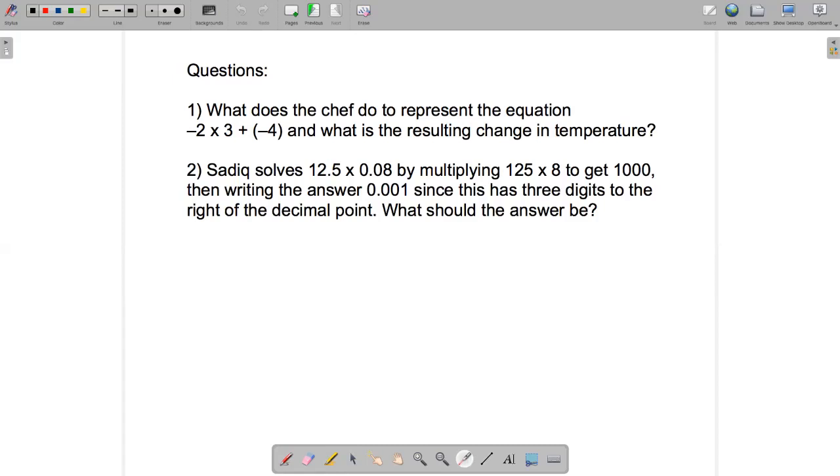And then question two: Sadiq solves 12.5 times 0.08 by multiplying 125 times 8 to get a thousand, so that's all good. But then he writes the answer 0.001, and his reasoning is this number has one, two, three digits to the right of the decimal point, and that must be correct because I've got one, two, three digits in total to the right of the decimal point in the numbers that I was multiplying. But you should be able to see that that's clearly not correct and that answer is much too small. So what should the answer be?